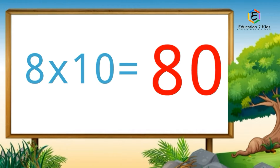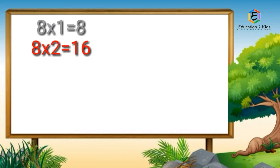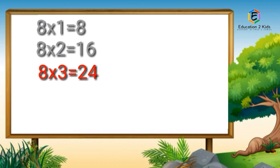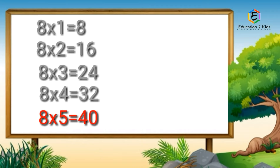8 ones are 8, 8 twos are 16, 8 threes are 24, 8 fours are 32, 8 fives are 40, 8 sixes are 48.